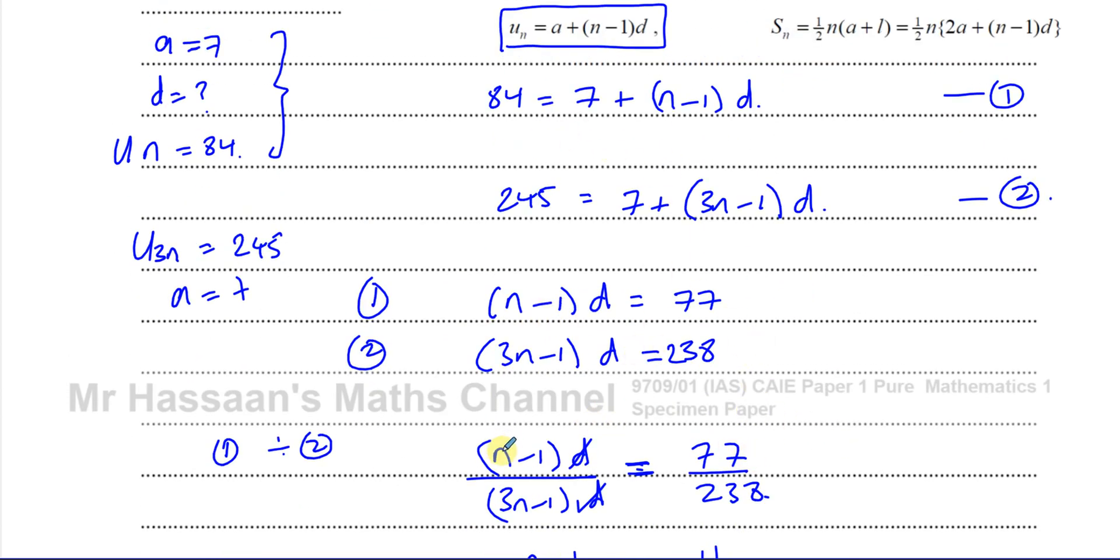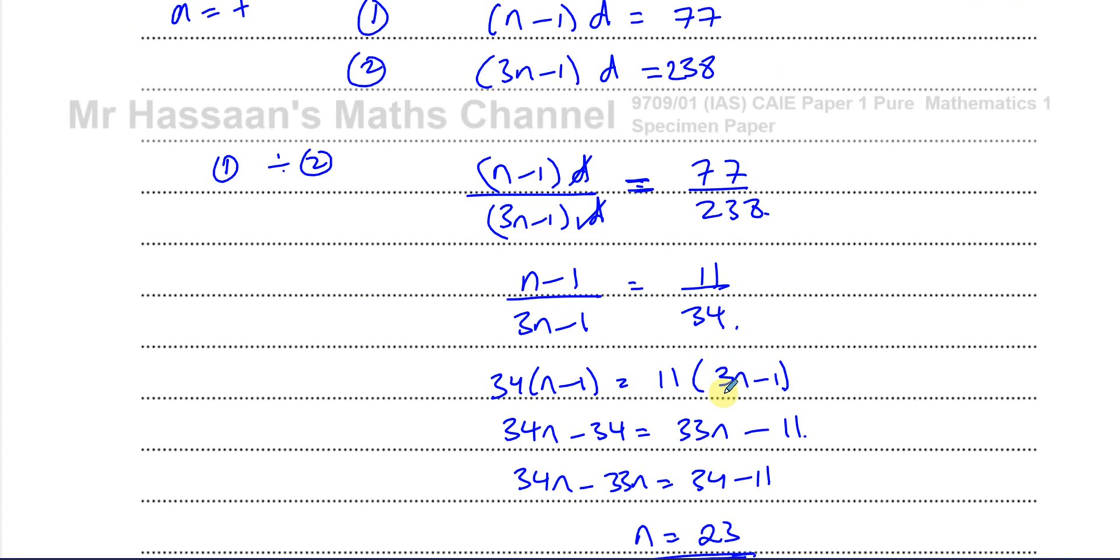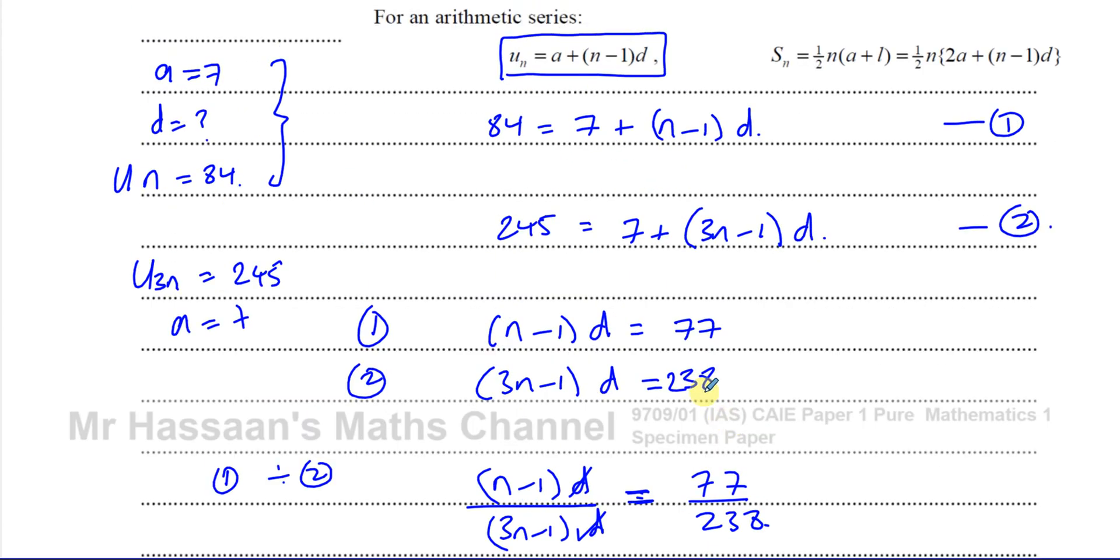Now this is something which could have been solved in other ways as well. We could have expanded this and dealt with it like a normal simultaneous equation situation. But I think this is a nice, easy way of dealing with it. I mean, I could have said, let's make d the subject of both of these. I'd have d equals 77 over n minus 1 and d equals 238 over 3n minus 1 and then equated the two. And I'll get the same thing in the end, but this is a nice and neat way of doing it. So there's the answer to this question.